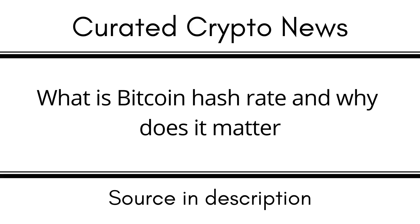How does Bitcoin's hash rate work? The SHA-256 cryptographic hashing function converts any input data into a 256-bit string. This hash is one of the technologies Bitcoin uses to measure its hash rate. Due to the one-way nature of this function, it is simple to determine the hash from an input, but not the other way around. A hash rate — which can be expressed in billions, trillions, quadrillions, and quintillions — measures how many calculations can be carried out each second. For instance, a hash rate of 1 BH/s indicates that one billion estimates can be made each second.